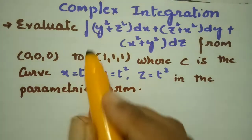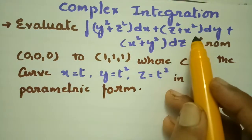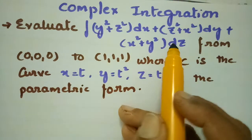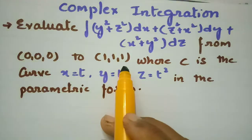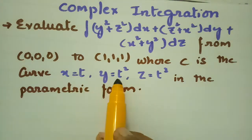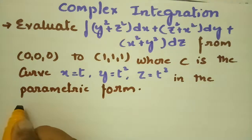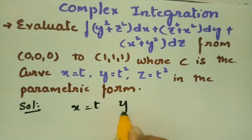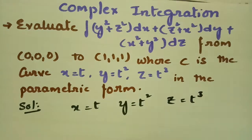We have to evaluate the integral of (y² + z²)dx + (z² + x²)dy + (x² + y²)dz from the point (0, 0, 0) to (1, 1, 1), where C is the curve x = t, y = t², z = t³ in parametric form.